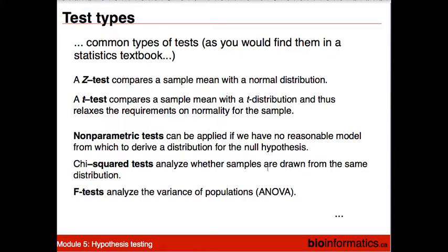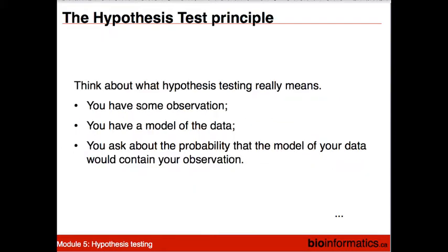And then there are chi-square tests and ANOVA tests for different situations. When we talk about hypothesis testing, we ought to think about what it really means. We test a hypothesis — we have some observation, we have a model of the data, and we ask about the probability that the model of your data would contain your observation. Unfortunately, often what people do is they went to graduate school and were taught to apply t-tests, so they keep applying them — they don't really know why, but it gives a p-value and they can put that into a paper, and we can be very wrong about that.